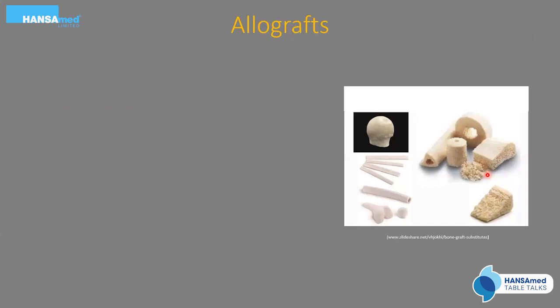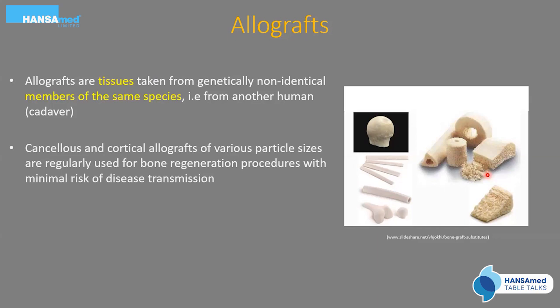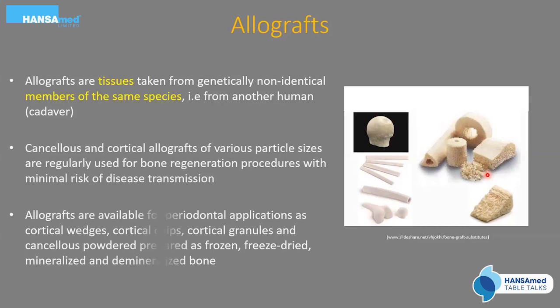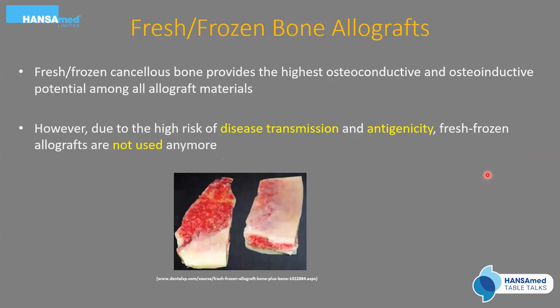Allografts are tissues taken from genetically non-identical members of the same species — essentially from other humans, usually cadavers. They come in cancellous and cortical varieties of various particle sizes, available as cortical wedges, chips, granules, or cancellous powders. Fresh frozen bone is no longer used due to disease transmission and antigenicity, though it had the highest osteoconductive and osteoinductive potential. Freeze-dried bone allografts (FDBA) — the freeze-drying process distorts 3D presentation of human leukocyte antigens, allowing use without immune reaction. FDBA is osteoconductive and can be combined with autografts to enhance osteogenic potential.